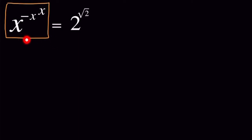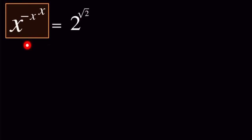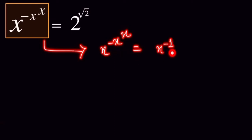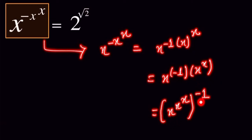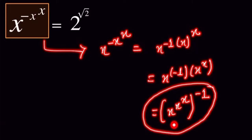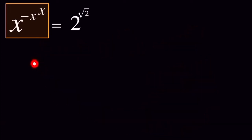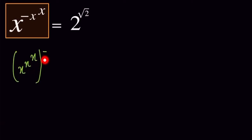First, we notice this part of the question: x to the power of minus x. We can write minus x as minus 1 times x, so x^(−1·x) becomes x^(x^x) to the whole power of minus 1. So this part can be written as (x^(x^x))^(−1).